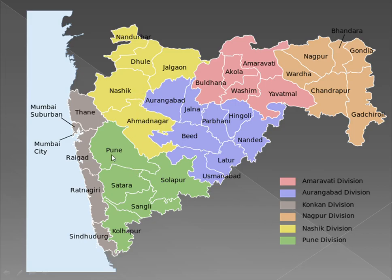And finally, Pune division comprises the districts of Pune, Satara, Solapur, Sangli, and Kolhapur. So this was all about the administrative divisions. We will meet in the next lecture, where we will see about the physical geography, which will comprise the mountains and various landforms in the state of Maharashtra.